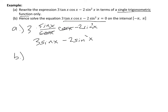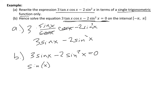Part B says 'hence, solve this equation' — so now I'm solving 3 sine x minus 2 sine² x equals 0. I can factor out a sine x, leaving sine x times (3 minus 2 sine x) equals 0. Using the zero product property: sine x equals 0, or 3 minus 2 sine x equals 0, which gives sine x equals 3/2.